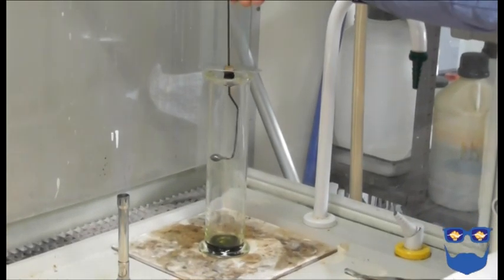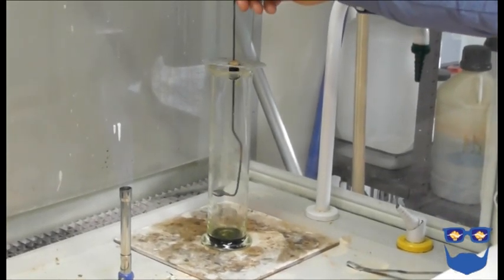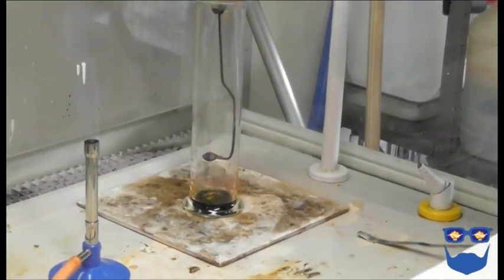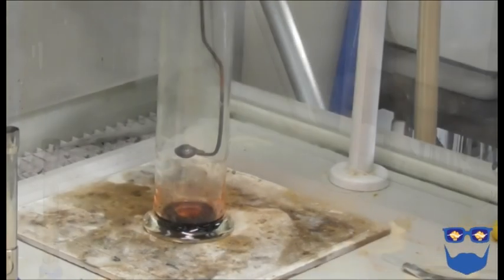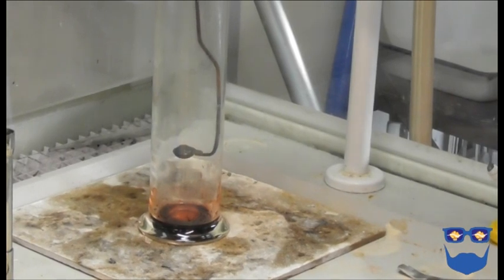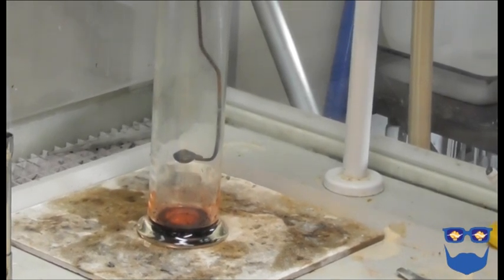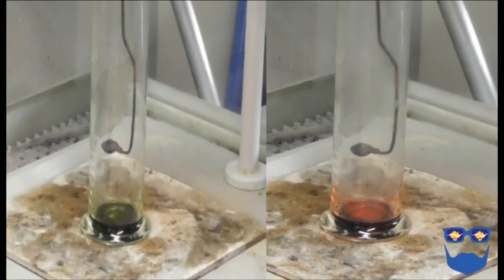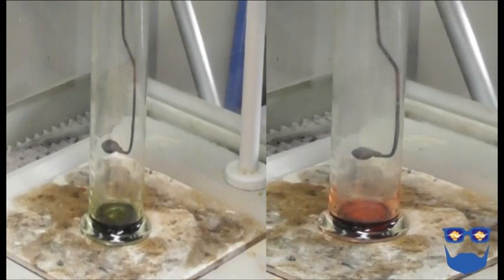Place the deflagrating spoon into the gas jar and observe the universal indicator. You should see the green color turn red as the gases in the gas jar dissolve in the solution and produce a strong acid.